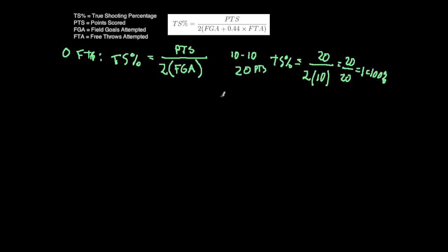That's fairly obvious, they went 10 of 10 from the field. But then if you look at another case, now let's say they shot all threes, going 10 of 10 again. They get 30 points, so their true shooting percentage is 30 over 2 times 10, which is 30 over 20, equals 1.5, or 150%.